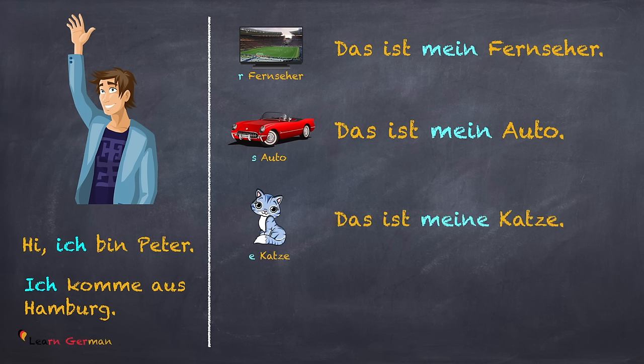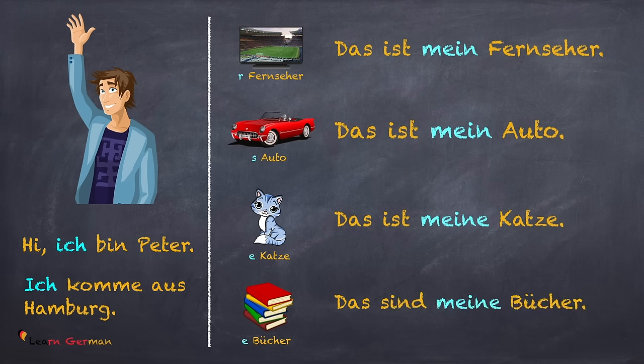Das ist meine Katze. When the article of the noun is 'die,' the possessive article used is 'meine.' Das sind meine Katzen. In case of plural, when the article is 'die,' the possessive pronoun used is 'meine.' So in the case of masculine and neutral, your possessive pronoun in Nominativ would be 'mein,' whereas in the case of feminine and plural, it would become 'meine' — you just add an E to 'mein.'